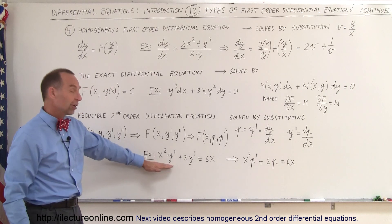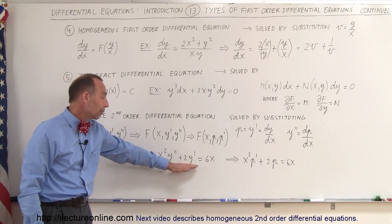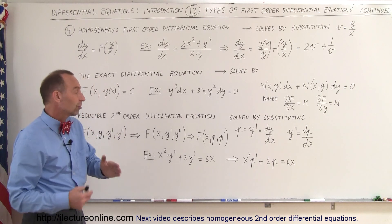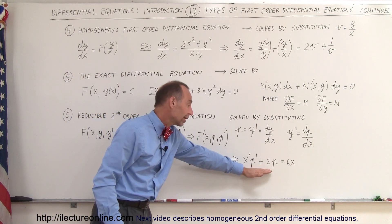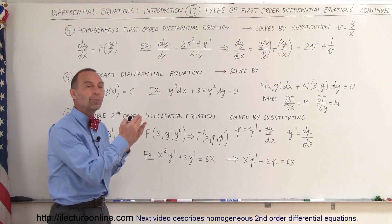For example, if we start out with an equation that looks like this, x squared y double prime plus 2y prime equals 6x, and we make the substitution, the equation now looks like this, and that of course is a first-order differential equation for which we use the proper technique.